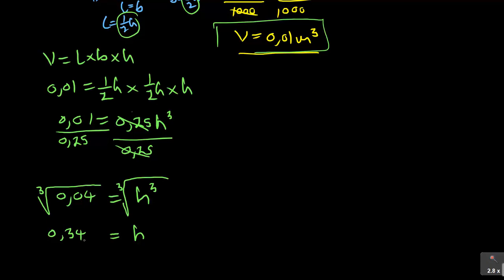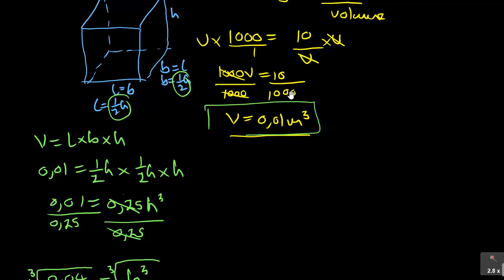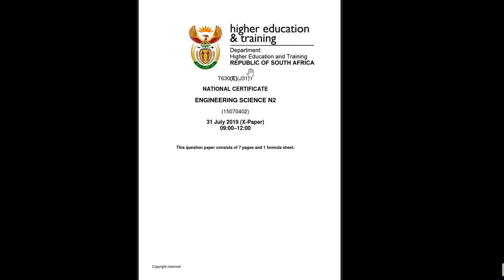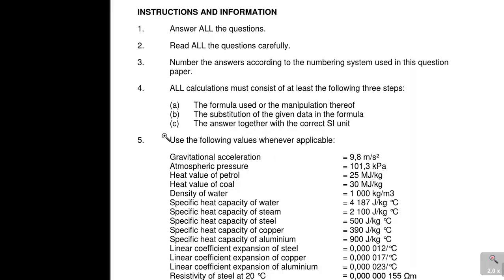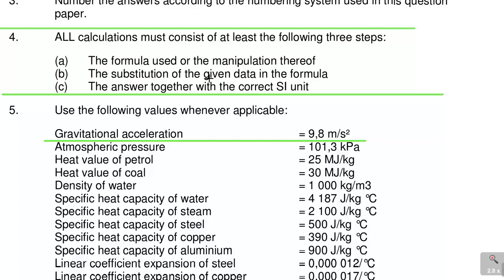That question was not in friction, but they included it in the paper. Now let us look at the next paper, written on 31st July 2019. Similarly, always remember your gravitational acceleration is 9.8 m/s². For all calculations, you need the formula, substitute the data into the formula, and your answer must include the correct SI units.